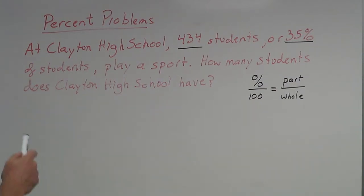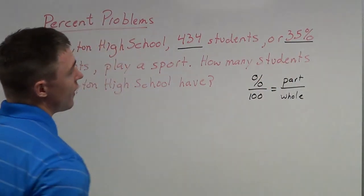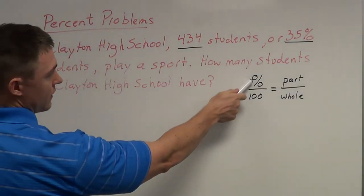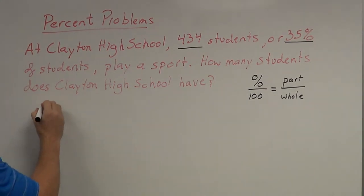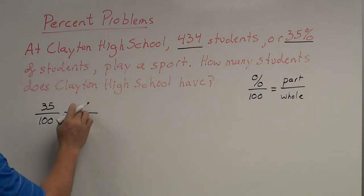One thing that I see right away is 35%. I know exactly where that's going to go. That's going to go in my percent spot right here. So, 35 over 100, that starts out my little formula here. Now, I've got to figure out what the part is and what the whole is. Do I know the part? Do I know the whole?